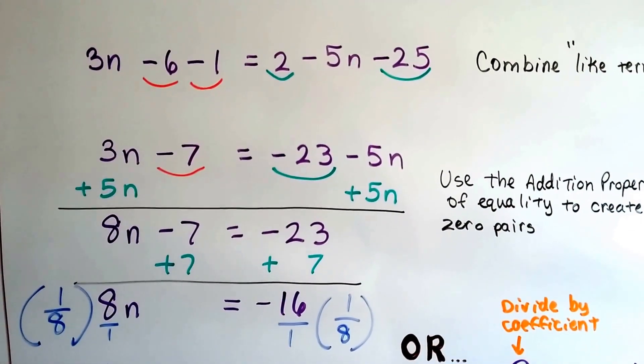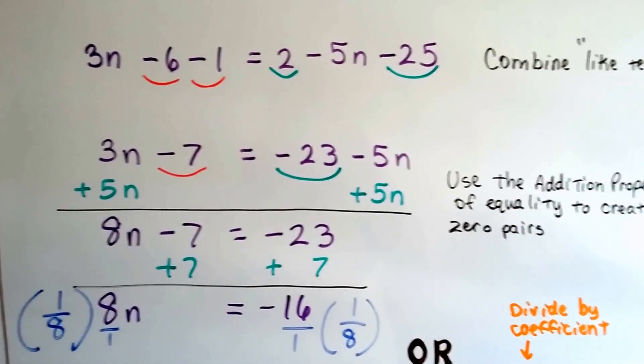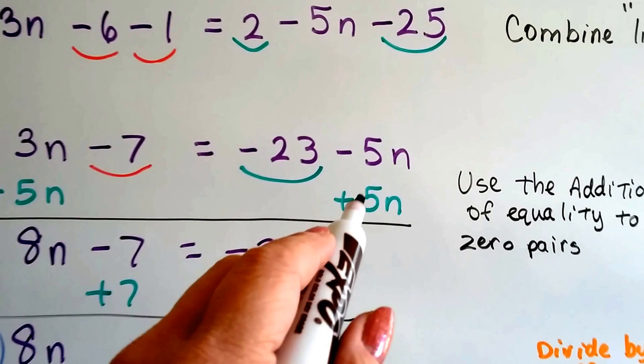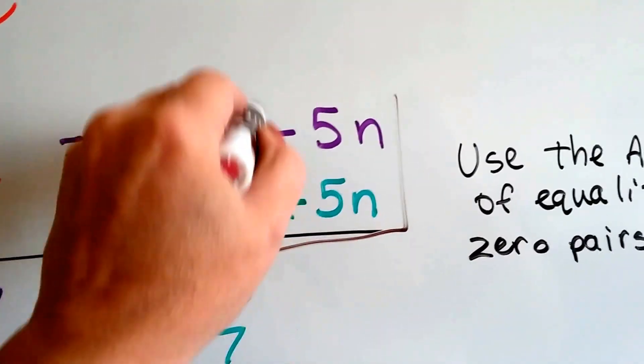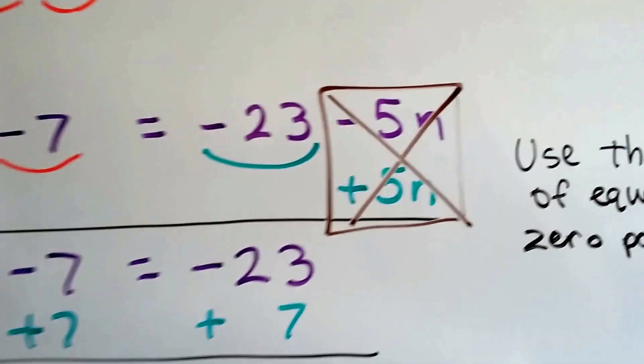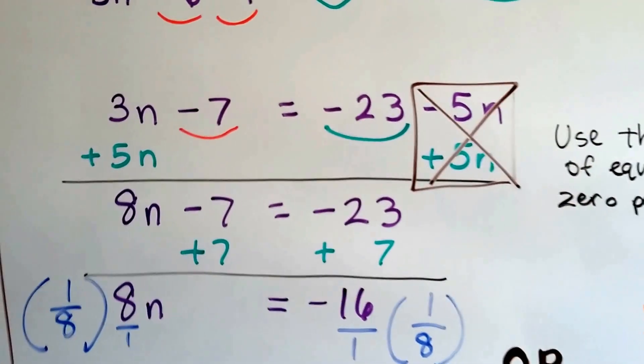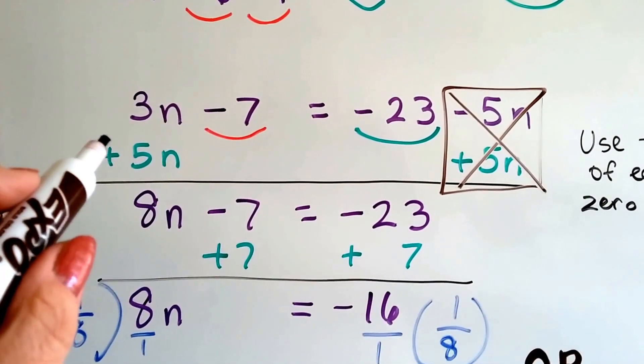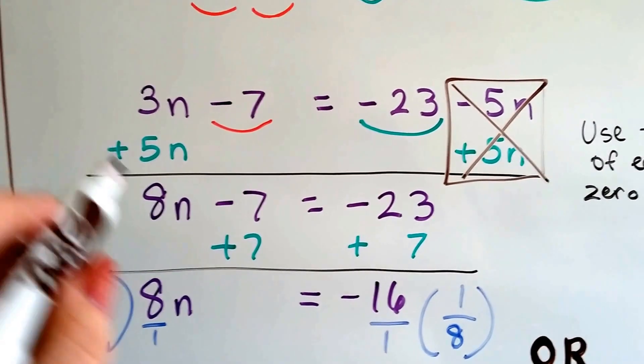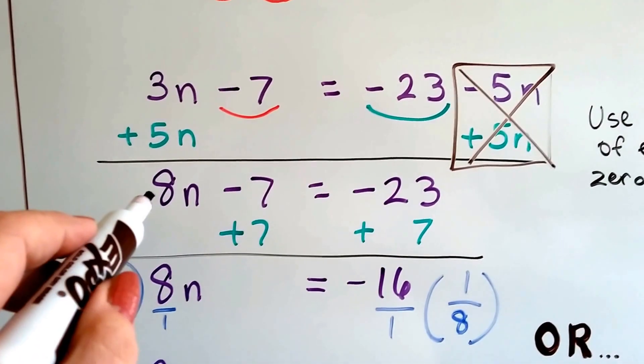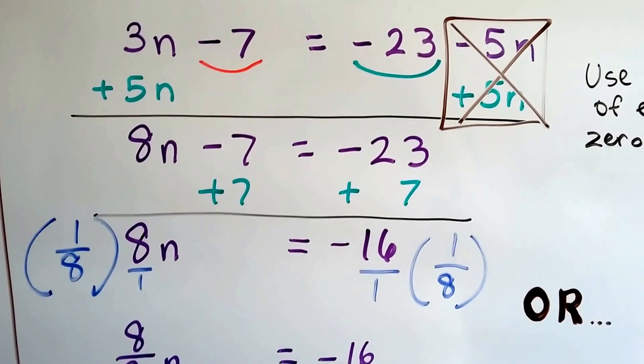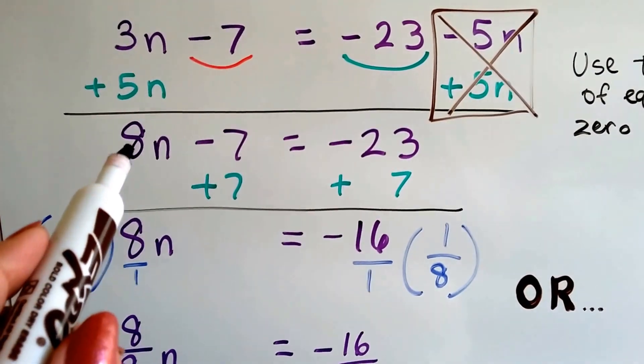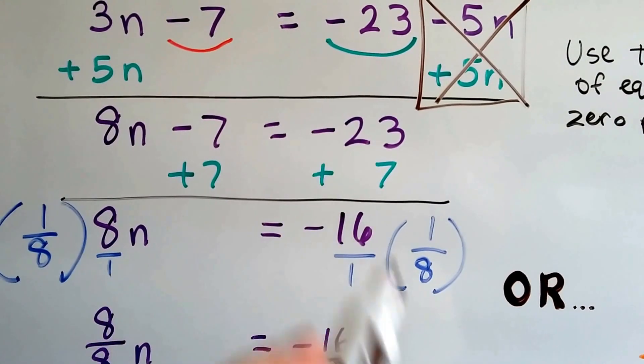So now we can use the addition property of equality to create zero pairs, and we do that right here. This minus 5n, we can add 5n, create a zero pair right here and get rid of it. So now we just have negative 23 on that side, and we have to add the 5n to this side to keep it balanced. So now we've got 8n on this side. We drop down our negative 7, and we've got 8n minus 7 equals negative 23.